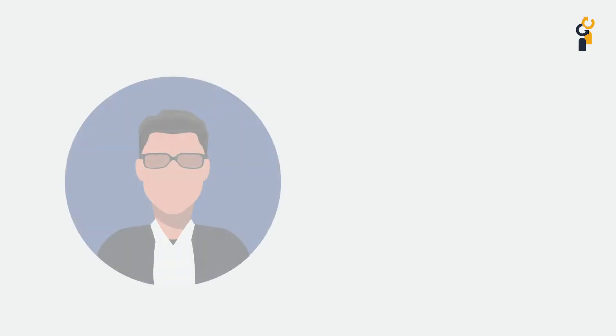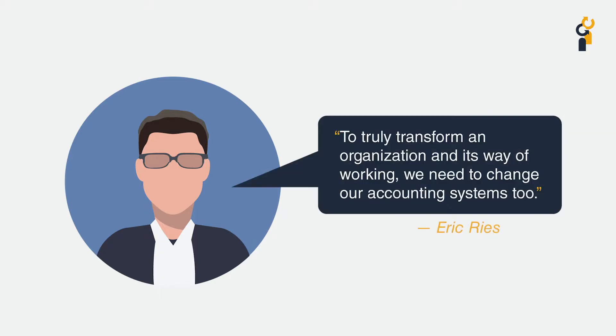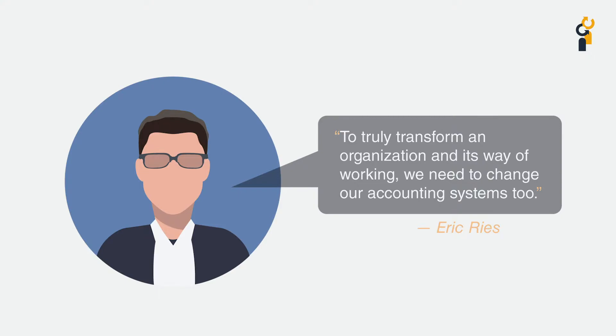During the nonlinear decision-making processes of spaces 3 and 4, how do we measure value and progress for a project that isn't bringing in any revenue and has no customers? Eric Ries, author of The Lean Startup, advocates this: to truly transform an organization and its way of working, we need to change our accounting systems too. We need to align finance with all other parts of the company being redesigned to further support the discovery and growth of innovative ideas.